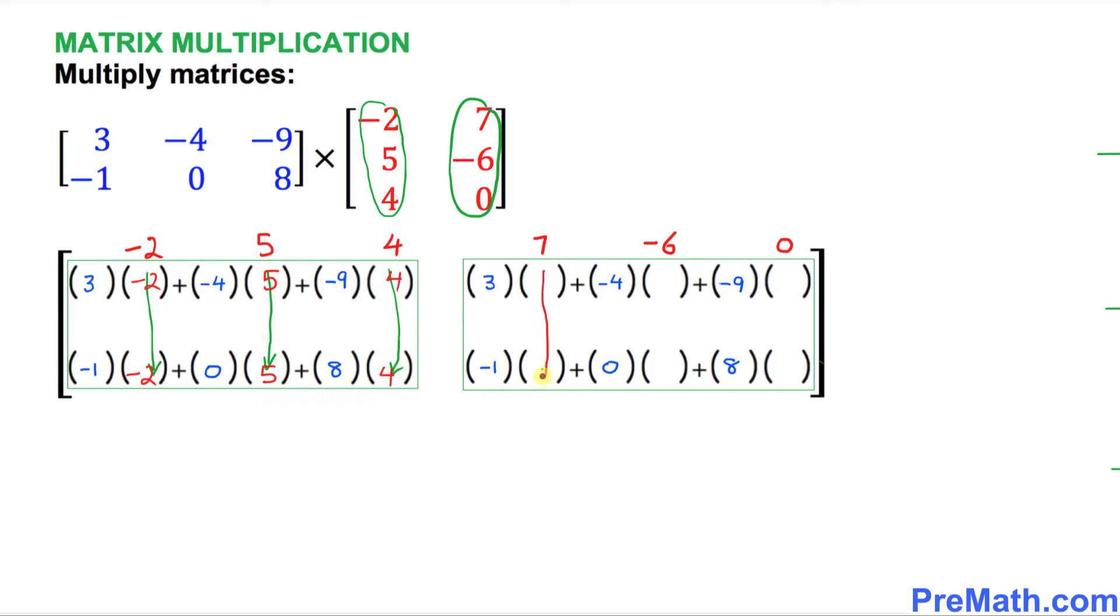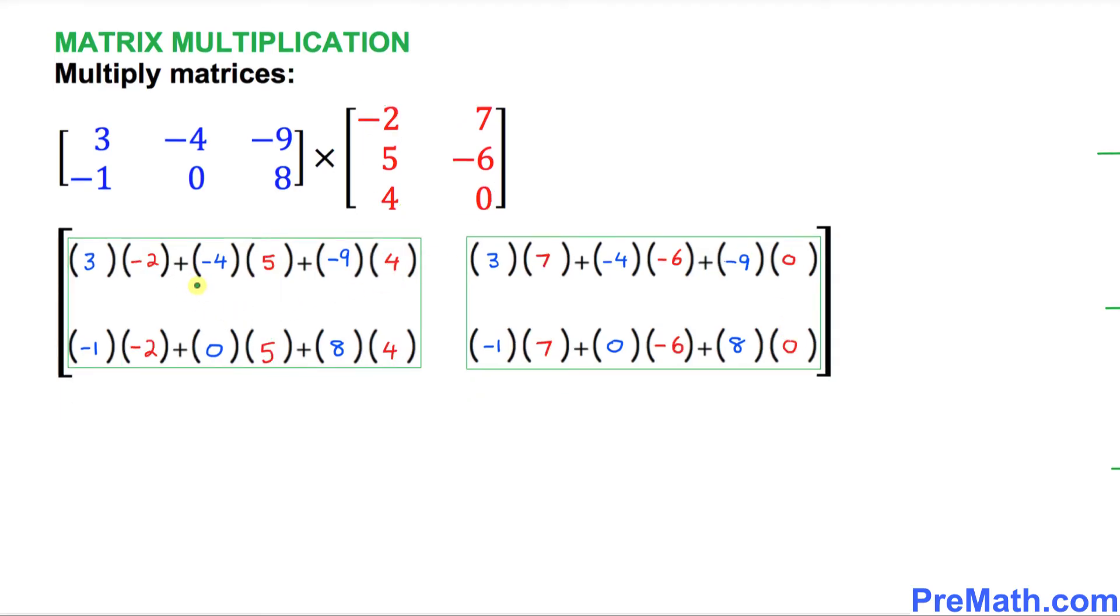Likewise, this 7 gets in over here. -6 goes over here, and 0 goes over here. And here is our final product with all these blue and red numbers nicely spread out.